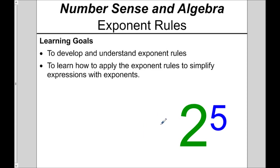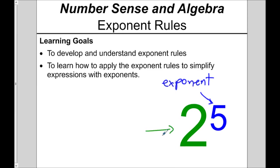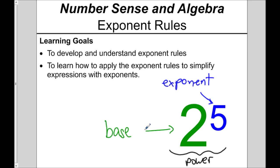We're going to go through some terminology. Here we have the expression 2 to the 5. That 5 is what we call an exponent. That big 2 is what we call a base. And as a whole, 2 to the 5 is what we call a power. We're going to be using these words, so hopefully it's clear what each of them mean.